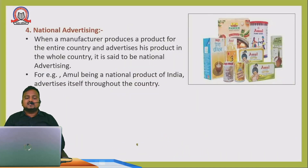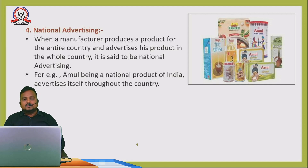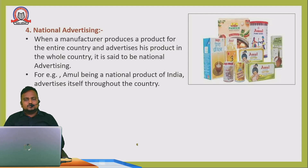Next is national advertising — this is for the full nation. When a manufacturer produces a product for the entire country and advertises the product throughout the whole country, it is called national advertising. For example, Amul — 'Amul, the Taste of India' — being a nationalized product, Amul advertises itself throughout the country and sells its products all over India. So it is called national advertising.